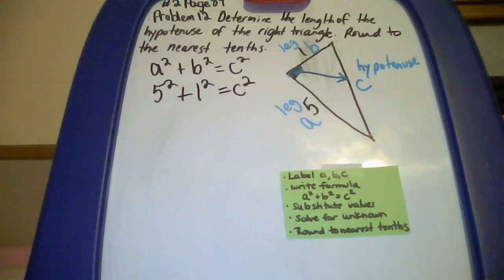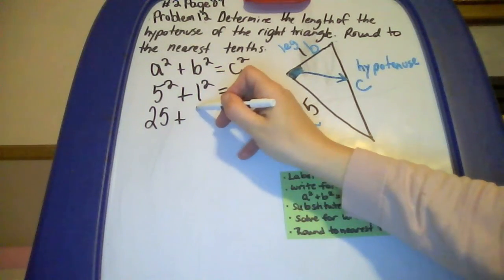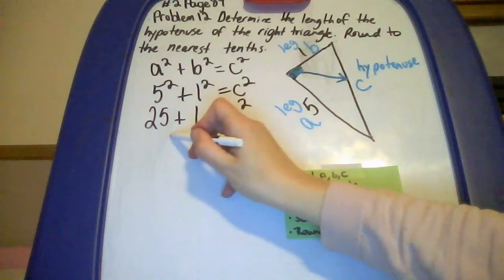Then I'm going to evaluate my exponents. 5 squared is 5 times 5, which is 25. 1 squared is 1 times 1, which is 1, and bring down your C squared. Do your addition over here. You get 26.